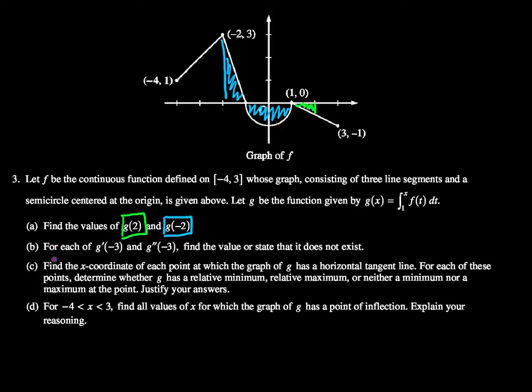All right, part B. It asks for each of g prime of negative 3 and g double prime of negative 3, find the value or state that it does not exist.